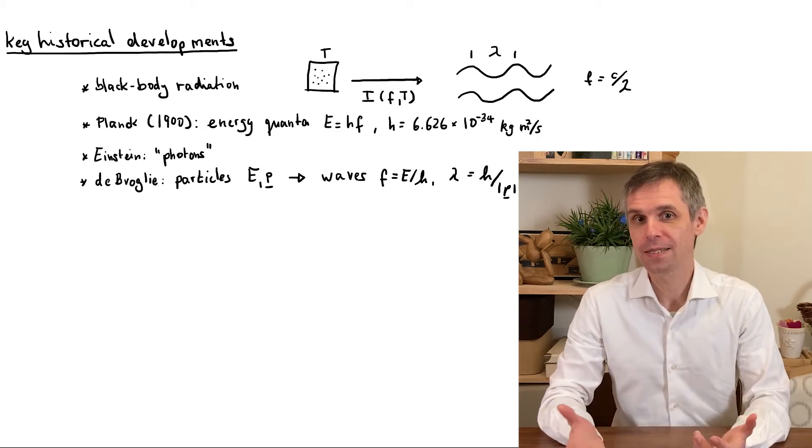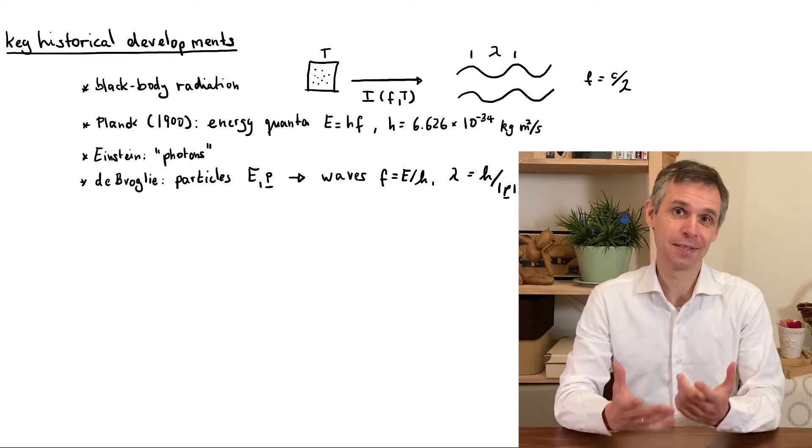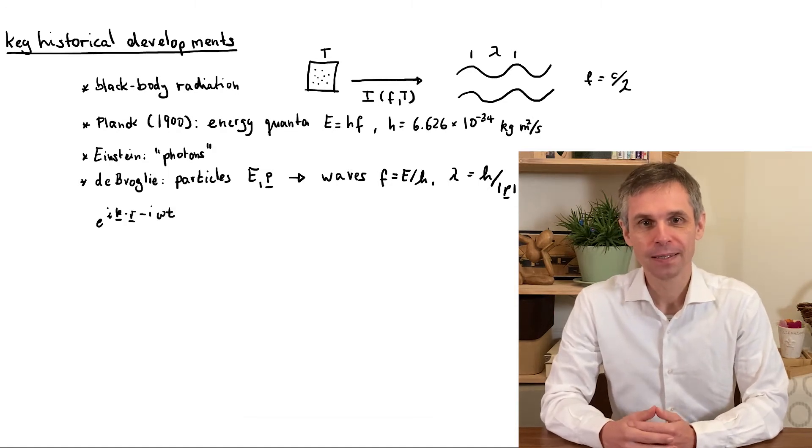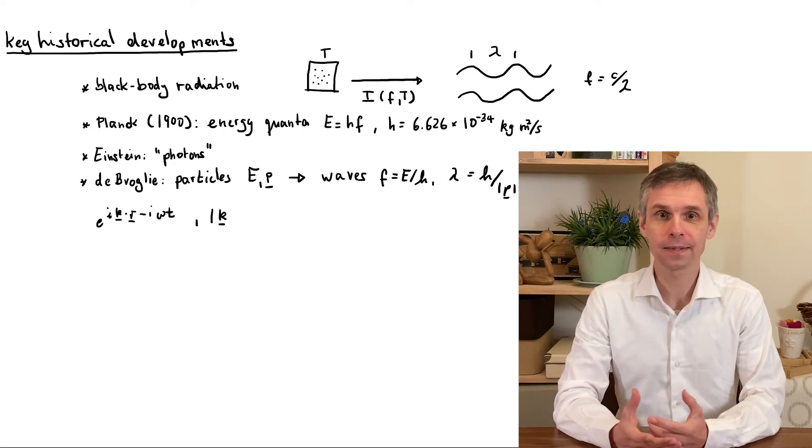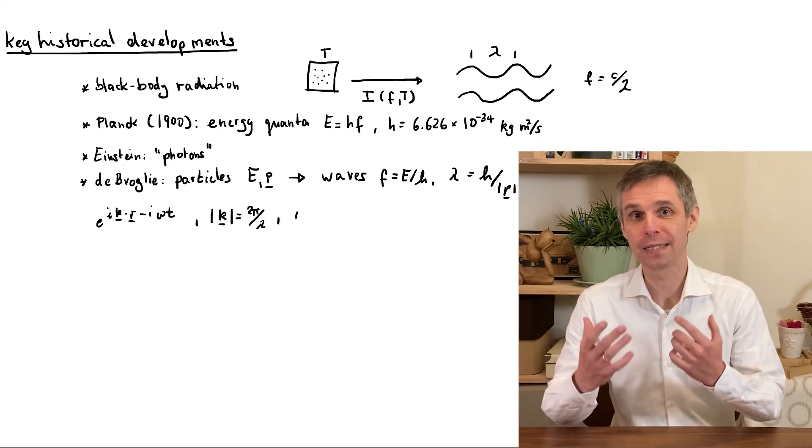This defines the properties of a monochromatic plane wave, which we nowadays would write down in a complex notation as indicated here. Here k is the wave vector of length 2π divided by the wavelength and ω is 2π times the frequency and is known as the angular frequency.